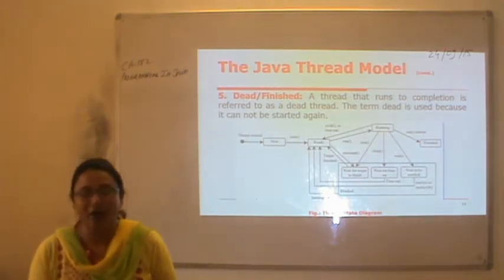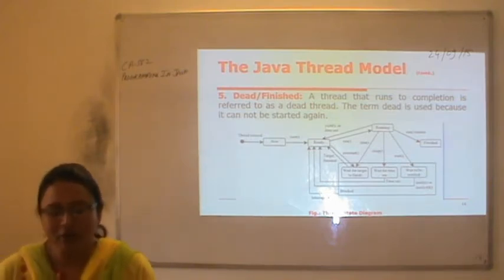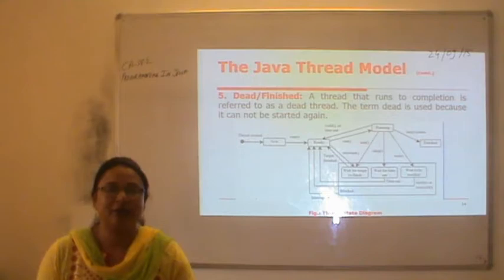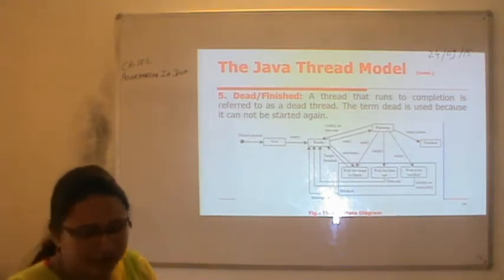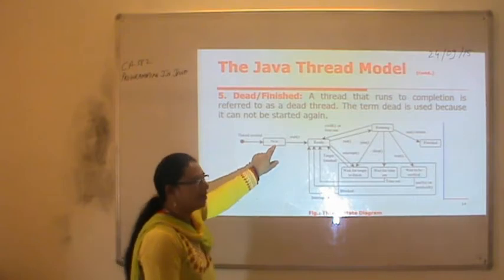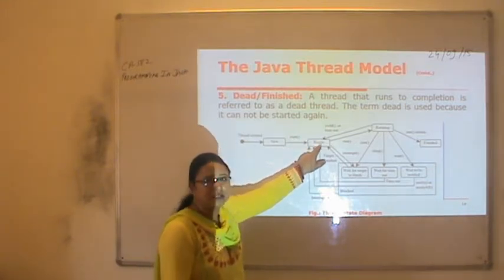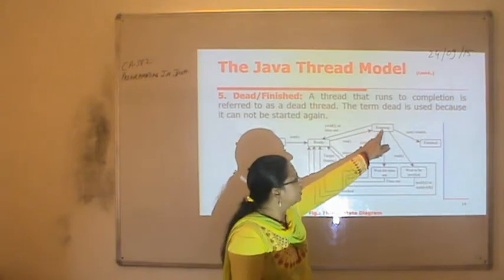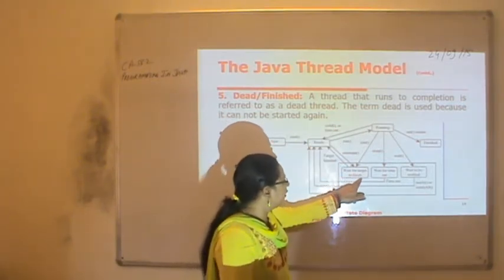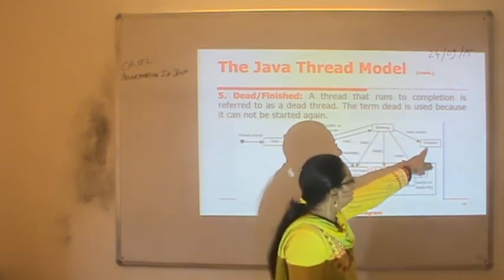The final state is the dead or finished state. A thread that comes to completion is referred to as a dead thread. The term dead is used because it cannot be started again. That is the last stage of the thread; it will not recycle itself or go to other stages. In the lifecycle diagram: a new thread starts in the born state, then by calling the start method it comes to the ready state. From ready, it goes to running, and from running it can go back to ready, wait for another thread, wait for a timeout, wait for notification, or after completion move to the finished state.